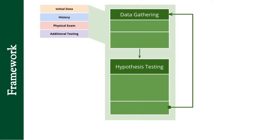We can get data from the paramedics or the chief complaint or the nurses. We can get it from questions that we ask the patient — that's called history. We can get it from listening to their lungs, listening to their heart, pressing on their belly — that's called the physical exam. And there are other tests that we can do, things like a chest x-ray or an EKG or a CAT scan. And what we do is we cycle through this data gathering hypothesis testing cycle over and over again.